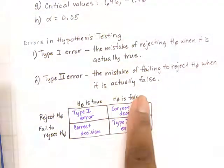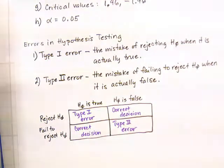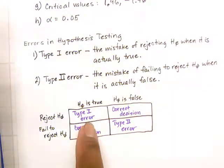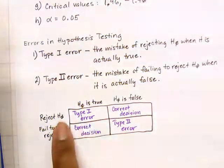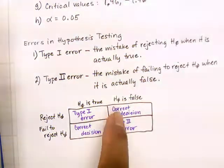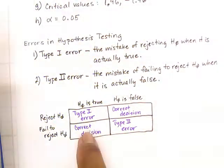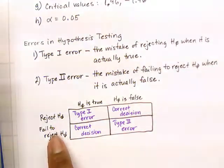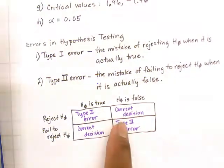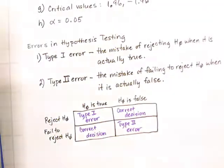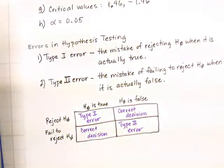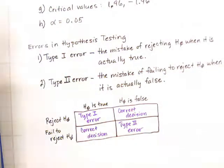To summarize: the null is either true or false, and you either reject or fail to reject it. If you reject the null and it is true, you made a Type 1 error. If you reject the null and it is false, you made the correct decision. If you fail to reject the null and it is actually false, then you made a Type 2 error. Now let's look at example E11, which is related to Type 1 and Type 2 errors.